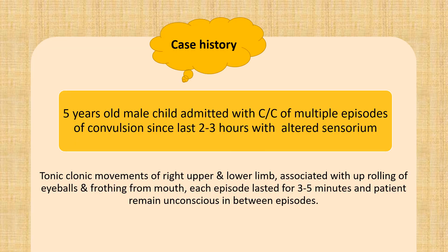Now I am going to tell you the case history in brief. Our patient was a 5-year-old male child admitted with the chief complaint of multiple episodes of convulsions since the last 2–3 hours with altered sensorium. Characteristically, the patient was having right-sided tonic-clonic movements with uprolling of the eyeball and frothing from the mouth, lasting 3–5 minutes, and the patient remained unconscious between episodes. There was a significant past history: since last 1 year, the patient was having similar episodes of convulsions almost 1–2 times a month. When we assessed development and intelligence, we found that the patient was having delayed development and low IQ.